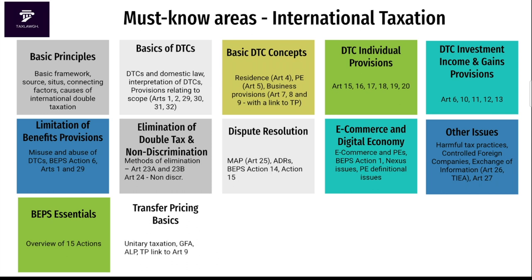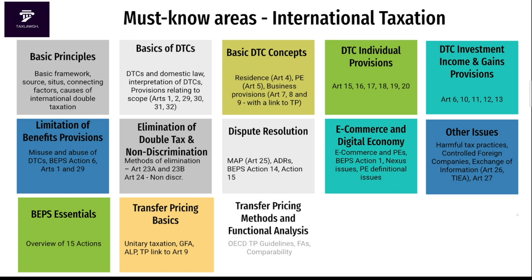You also need to look at the essentials of base erosion and profit shifting and all 15 BEPS actions. Then comes transfer pricing — you can never pass an international tax paper if you do not know something about transfer pricing; it appears in every single exam. Key areas include global formula apportionment, the arm's length standard and how this links to Article 9 of the Model Tax Convention, the methods of transfer pricing, and functional analysis.